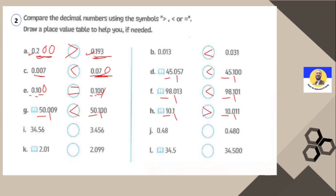Letter I: take care — before the decimal point, one number is 34 and the other is just 3, so 34 is the greatest. Next: 48 hundredths and 480 thousandths — we can add an extra zero, so both numbers are equal. Letter K: 2.01 and 2.09 — adding extra zeros gives 010 versus 090, so 90 is the greatest, meaning 2.09 is greater. Letter L: 34 equals 34, then 5 versus 5.0 — the trailing zero cancels, so both are equal.